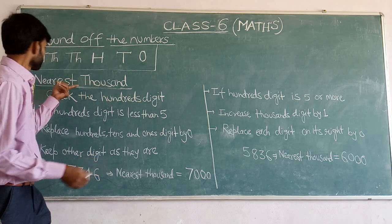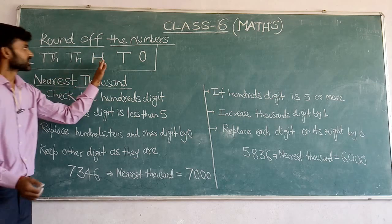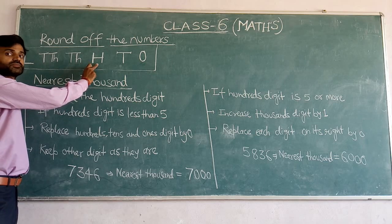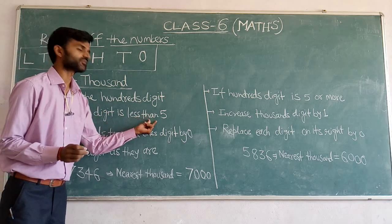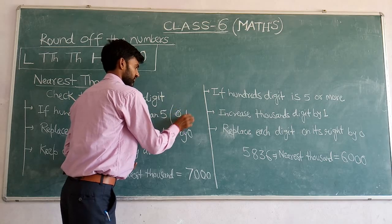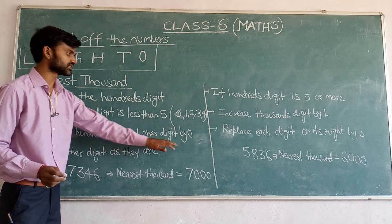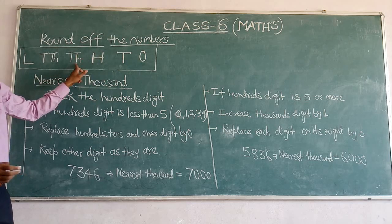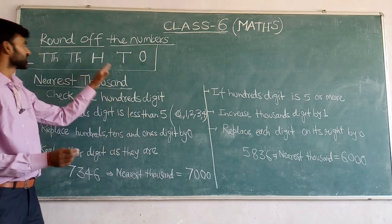Now, nearest 1000. The same rule — first look at the place before the 1000, which is the hundreds place. Check the hundreds digit. If the hundreds digit is less than 5 — meaning 0, 1, 2, 3, or 4 — replace the hundreds, tens, and ones digits by 0 and keep the thousands digit and other digits as they are.